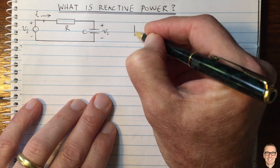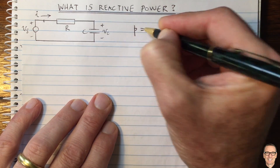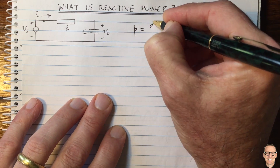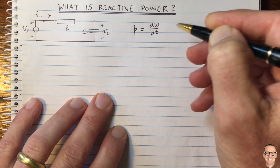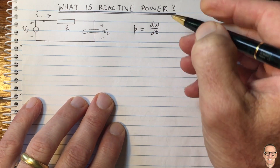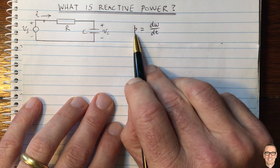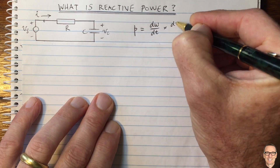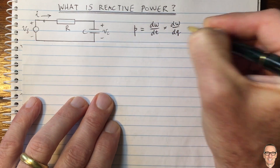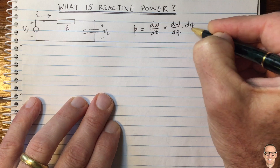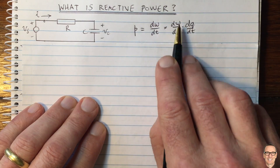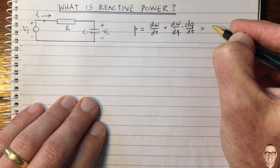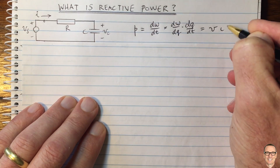Electrical power — I'm going to use little p — equals the electrical energy flow, so that's dw/dt. This is energy over time, a power flow, which is really critical. We can write this as dw/dq times dq/dt. This is the energy per charge, which is the voltage, and the charge per time, which is the current. So power equals voltage times current.